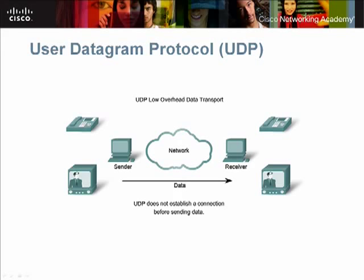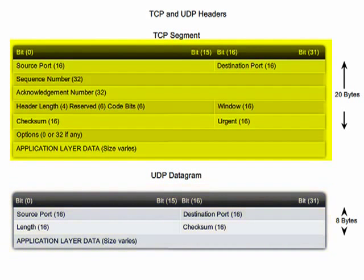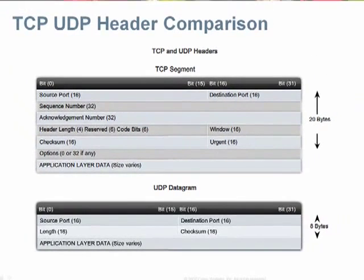UDP is a simple protocol that provides only basic transport layer functionality. The header information added to upper layer data by UDP is smaller than that added by TCP. UDP is not connection-oriented and does not provide the sophisticated retransmission, sequencing, and flow control mechanisms that are provided by TCP. This does not mean that applications that use UDP are always unreliable — it simply means that these functions are not provided by the protocol and must be implemented elsewhere, usually at the application layer if required.